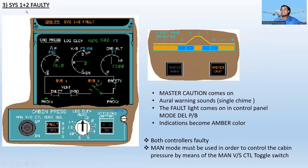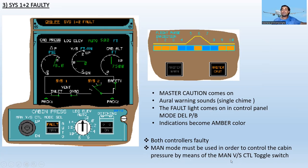When both System One and System Two are faulty, the master caution comes on and an oral warning sounds as a single chime. The fault light comes on in the control panel on the mode select push button, and all indications become amber. When both controllers are faulty, manual mode must be used to control cabin pressure via the manual vertical speed control toggle switch.